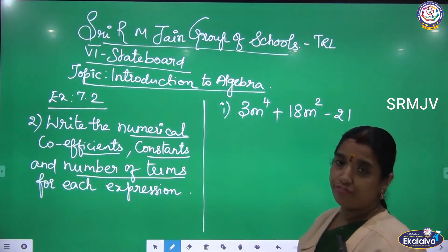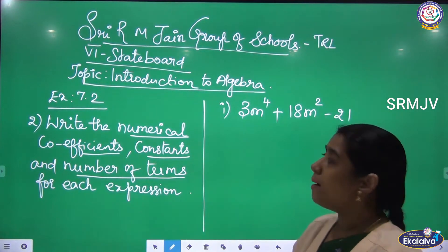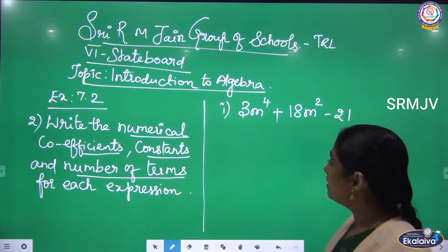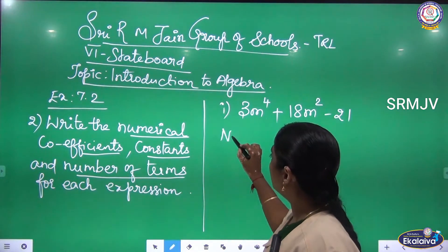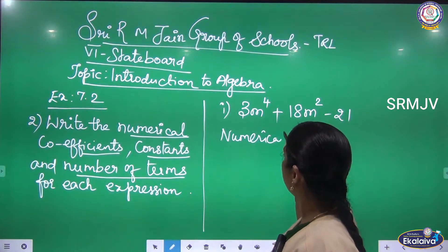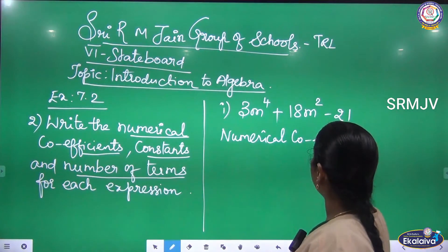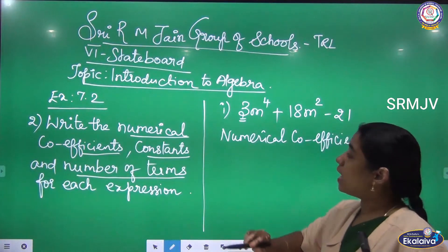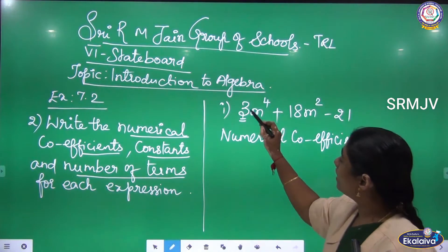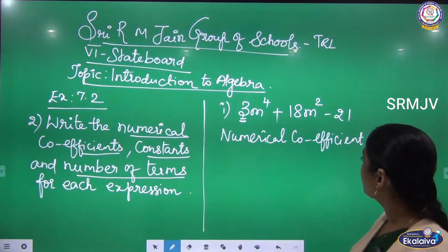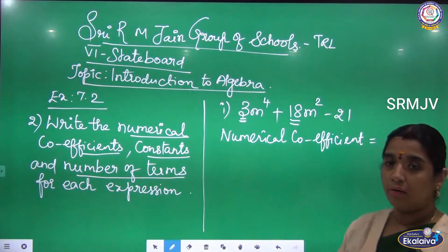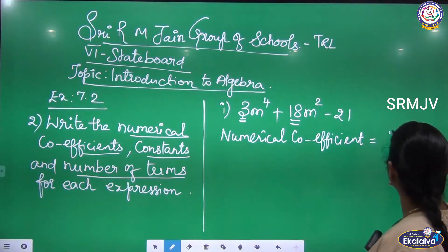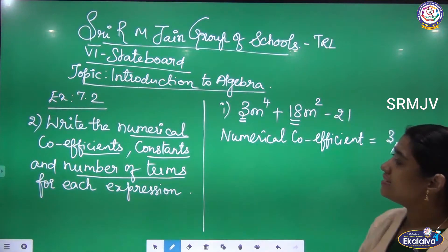The algebraic expression given is 3m⁴ + 18m² - 21. The first step: I am going to find the numerical coefficient. A numerical coefficient is a number which is associated with the variable. So the numerical coefficients here are 3 and 18.